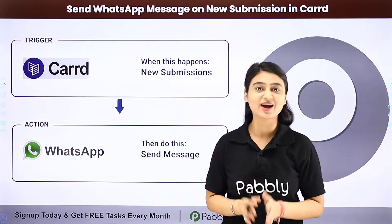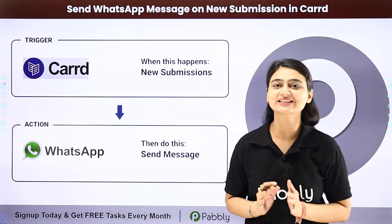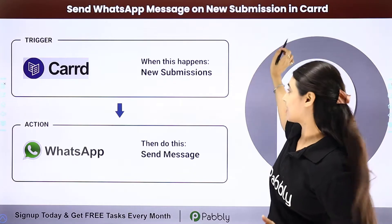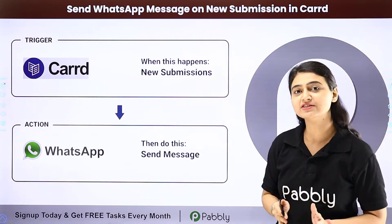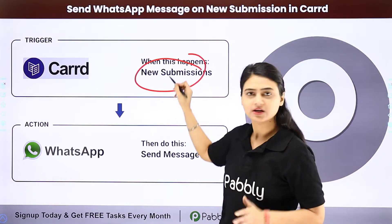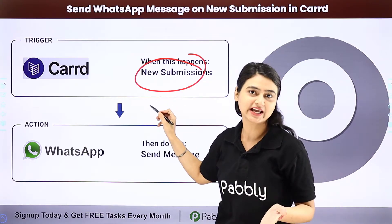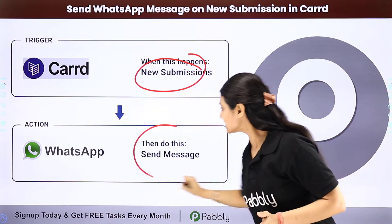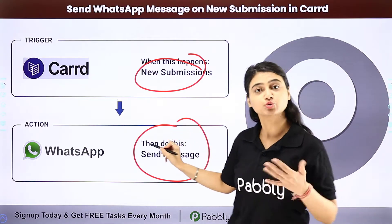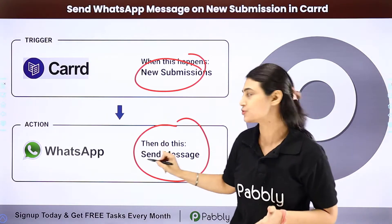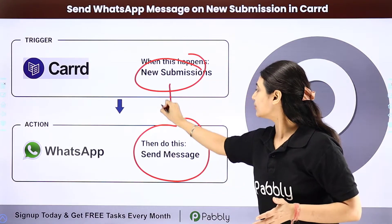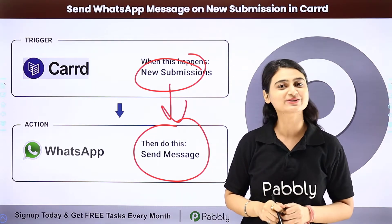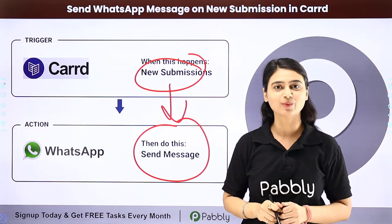In this video we will learn how you can automatically send a WhatsApp message on new submission in card. So let's say you want every time there is a new submission in card — it could be anything, let's say a lead submission — you want to send a WhatsApp message to that lead acknowledging their submission. We are going to automate this entire process using Pabbly Connect.